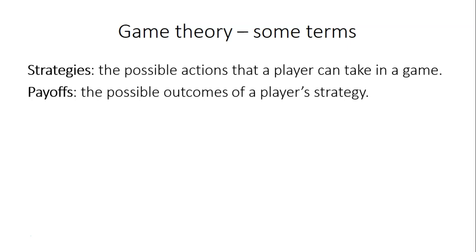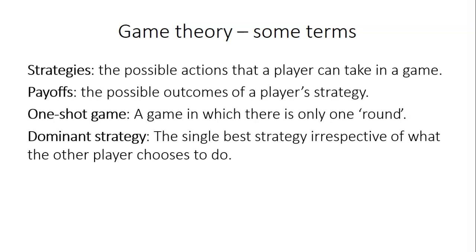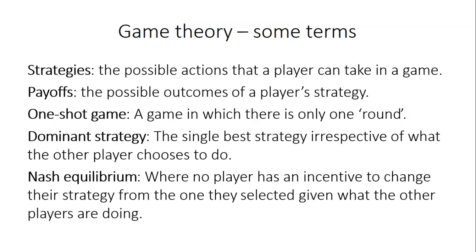Payoffs are the possible outcomes of a player's strategy relative to another player's strategy. A one-shot game is a game where there is only one round. A two-shot game has two rounds, and a repeated or multi-shot game is one in which you play over and over again. A dominant strategy is the single best strategy for a player irrespective of what the other player does. A Nash equilibrium is where no player has an incentive to change their strategy given what the other players are choosing to do.